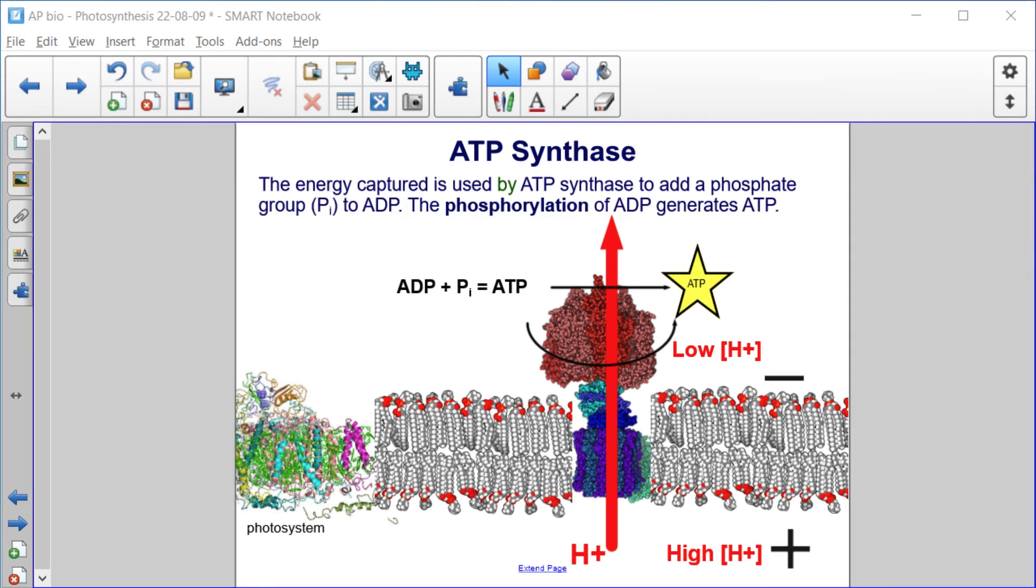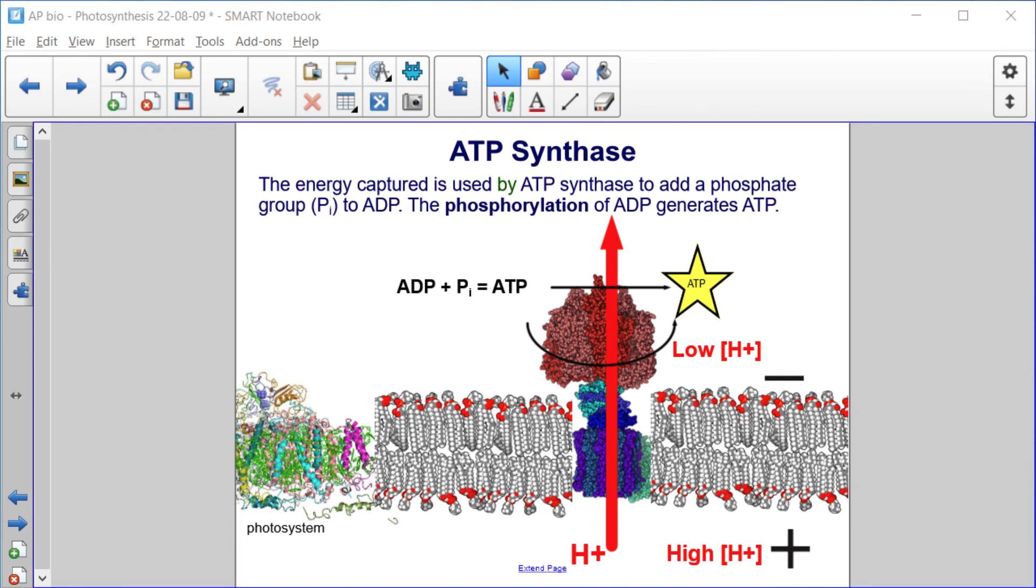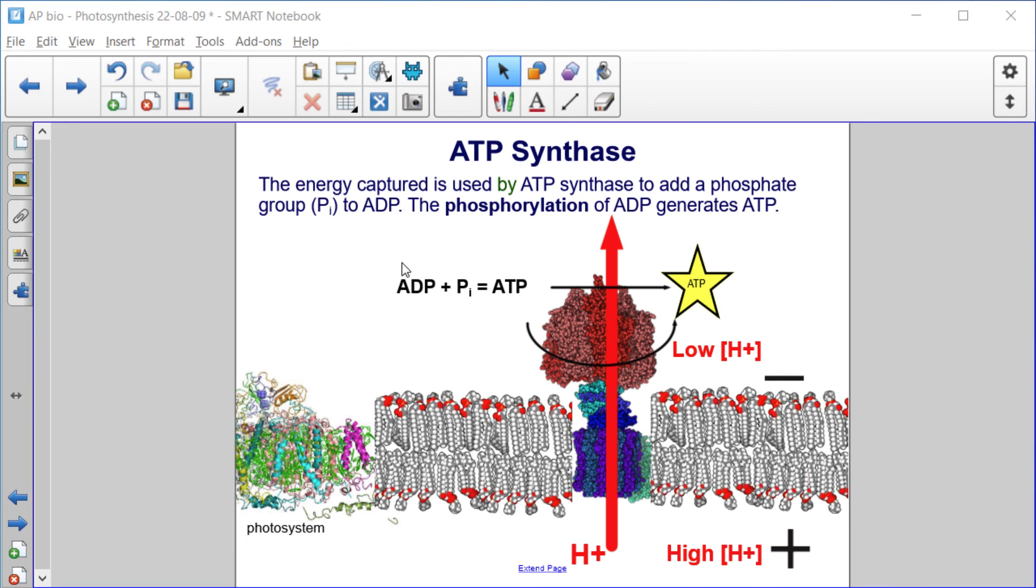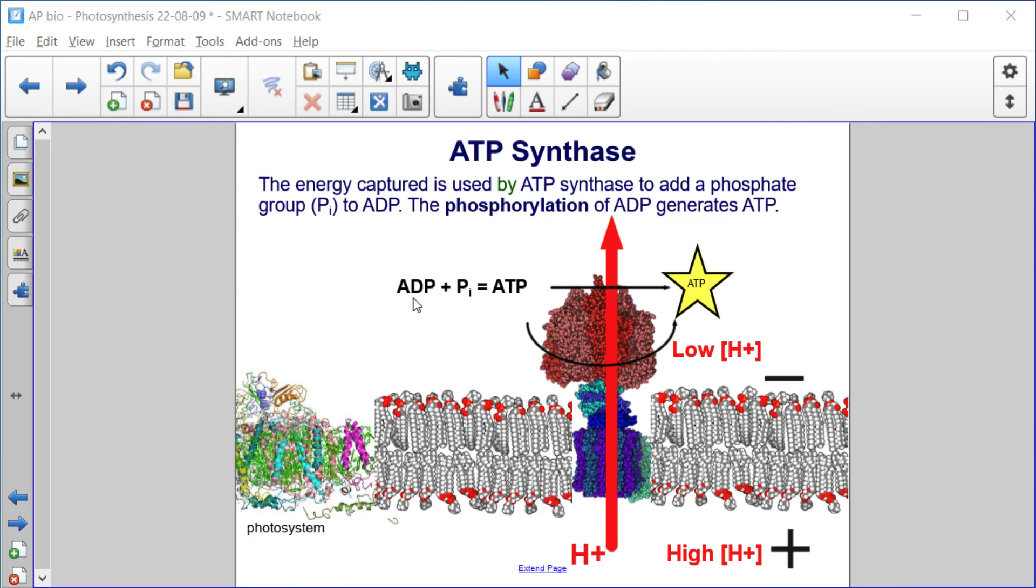The energy captured is then used by ATP synthase to add a phosphate group, Pi, to ADP. The phosphorylation of ADP generates ATP.